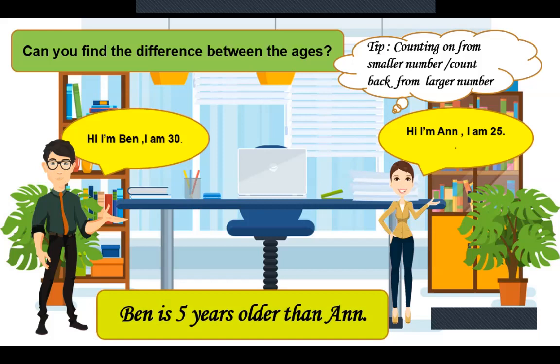Now again I am counting back from larger number. Here Ben is 30. From 30 if I am counting backward to 25: 30, 29, 28, 27, 26, 25. Here also I got 5. So both the answers will be same counting on from smaller number. So Ben is 5 years older than Ann.